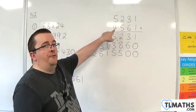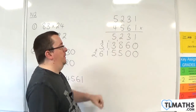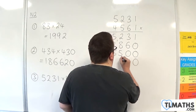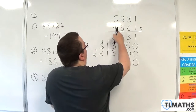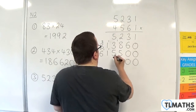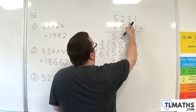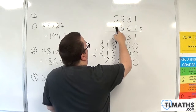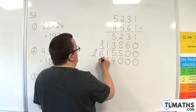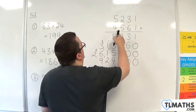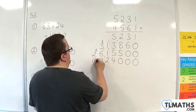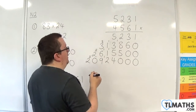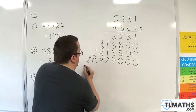We then need to multiply by 4,000, so that needs three 0s to be put in place. 4 times 1 is 4. 4 times 3 is 12, put in the 2, carry the 1. 4 times 2 is 8 plus the 1 is 9. 4 times 5 is 20, so put in the 0, carry the 2, and the 2 just drops down.